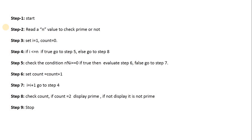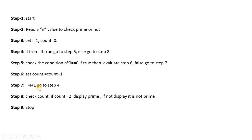Let's trace with n=5. Set i=1, count=0. In step 4, 1 ≤ 5 is true, so go to step 5. Step 5: check if n % i == 0, that is 5 % 1 == 0, which is true. So go to step 6: set count = count + 1. Count was 0, now it becomes 1. Then step 7: i = i + 1, so i becomes 2. Go back to step 4.